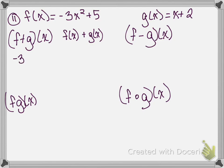So we're going to have negative 3x squared plus 5 and we are going to add to that x plus 2. Our negative 3x squared does not have anything to combine with, our x also does not have any like term, and then we have our 5 and our 2. So we have negative 3x squared plus x plus 7.